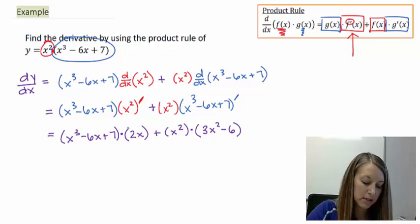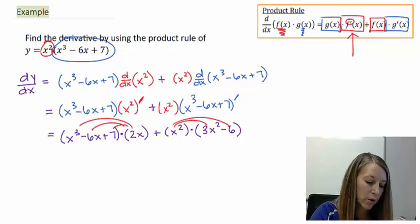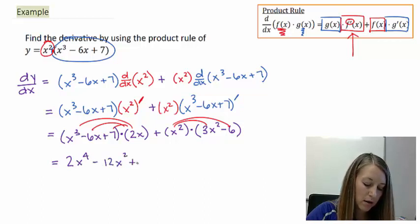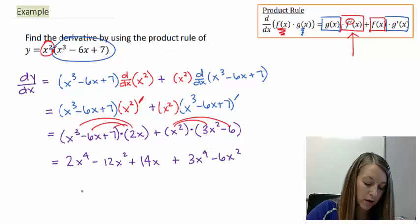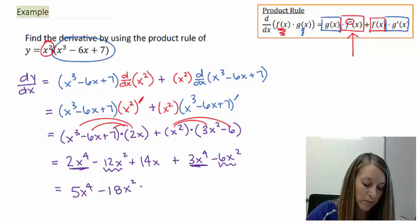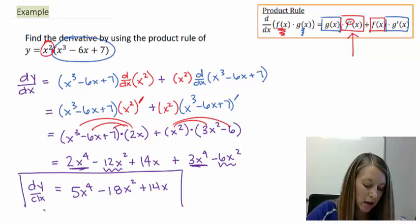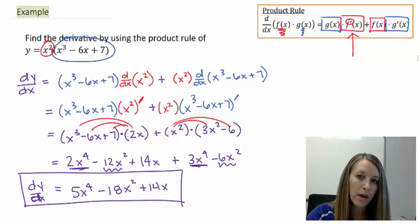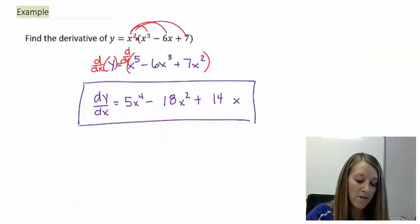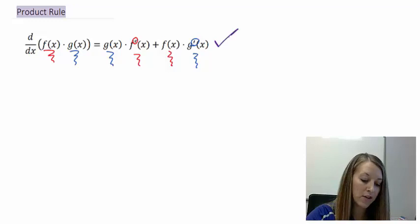Now I simplify by distributing 2x through the first term and x squared through the second. That gives 2x to the fourth minus 12x squared plus 14x, plus 3x to the fourth minus 6x squared. Combining like terms: 2 plus 3 gives 5x to the fourth, negative 12 minus 6 gives negative 18x squared, plus 14x. Checking against our earlier answer — it's the same: 5x to the fourth minus 18x squared plus 14x. So this confirms the product rule is correct.